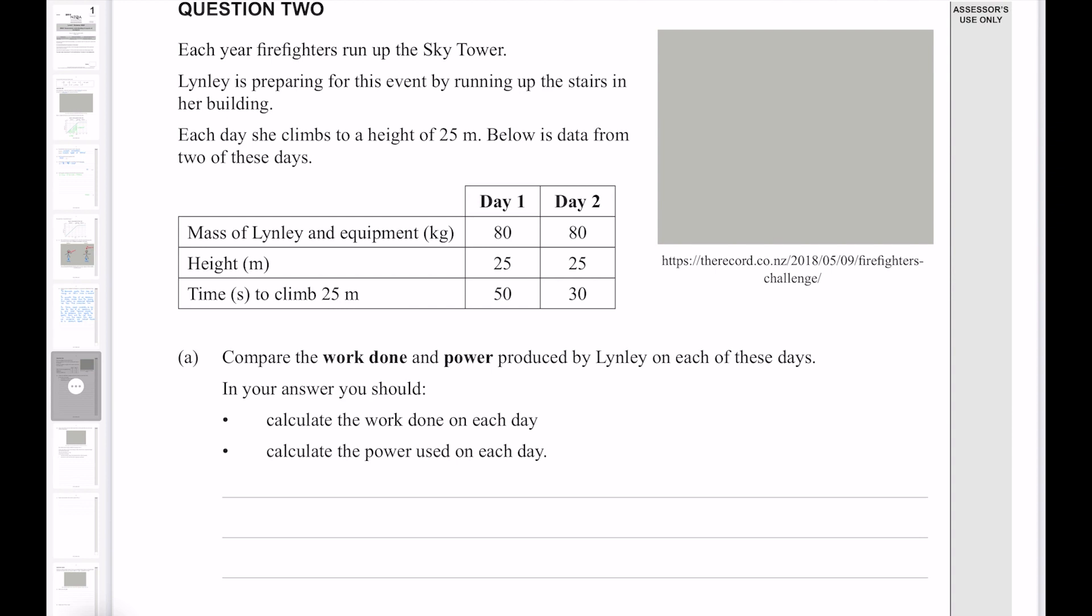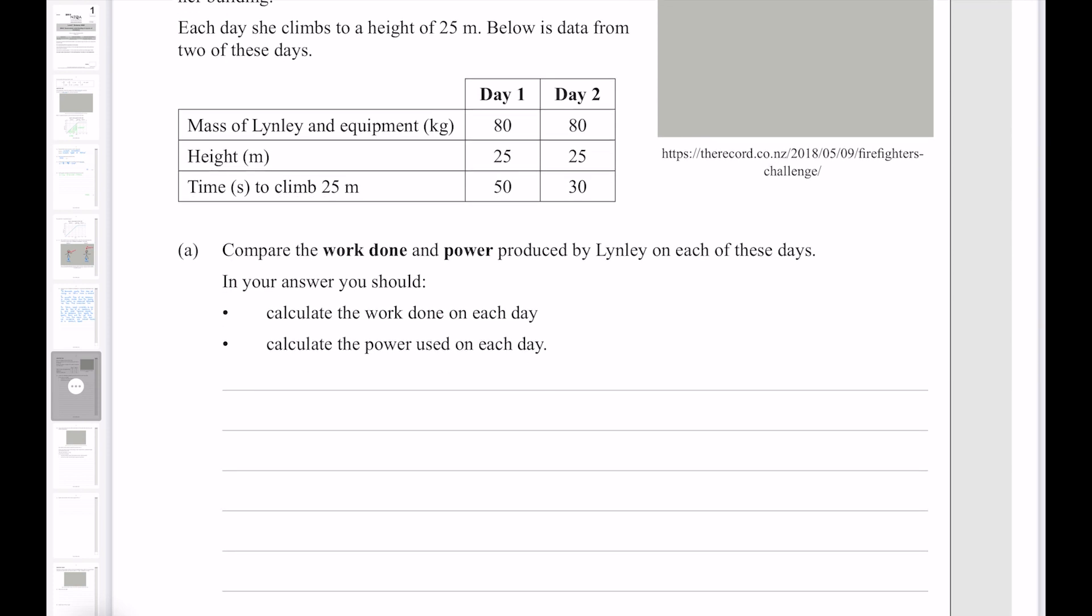Question two. Each year firefighters run up the sky tower. Linley is preparing for this event by running up the stairs in her building. Each day she climbs to a height of 25 meters. Below is data from two of these days. Given the mass of Linley and her equipment, which does not change, we see that the height of the stairs does not change. But on day one, she completes it in 50 seconds. And on day two, she reduces that to 30 seconds.